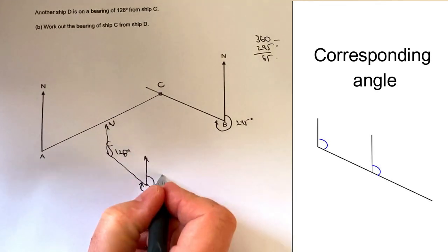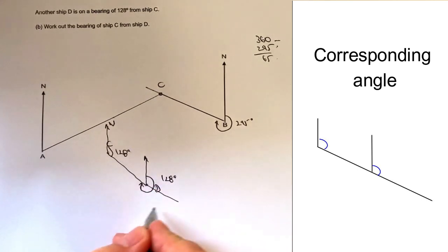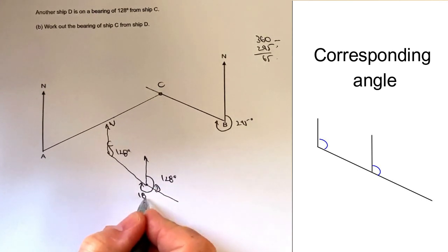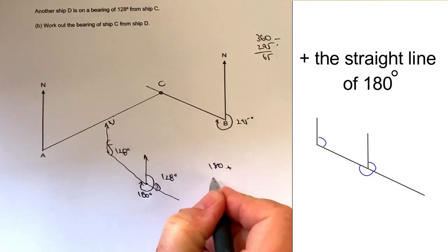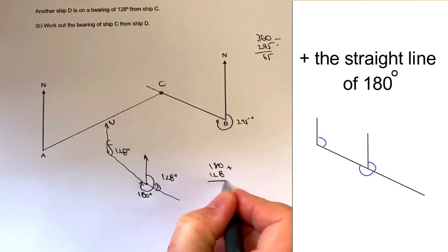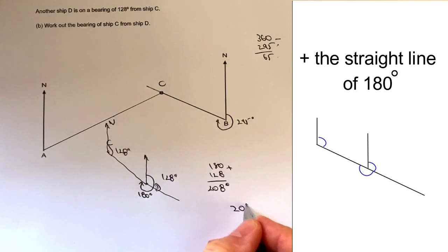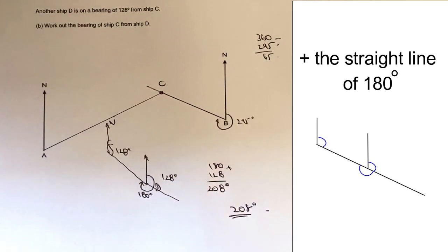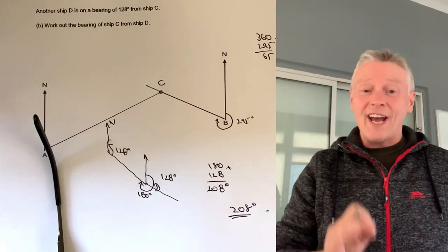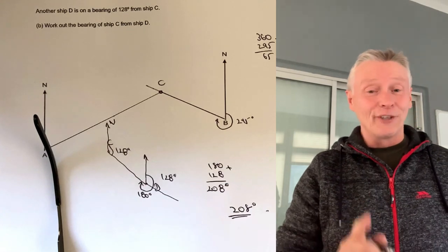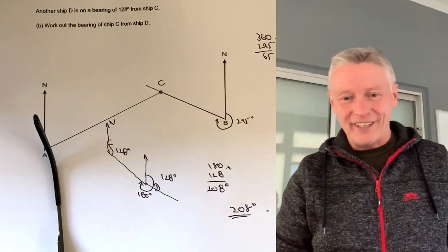You've got this F shape along here, so this would be 128 degrees too. This would be 180 because it is a straight line, so 180 plus 128 is going to give you 208 degrees, and 208 degrees is the answer to that particular question. Hope it's been useful for you. Add a comment below if you're not sure about anything. I'll look forward to seeing you inside the video.